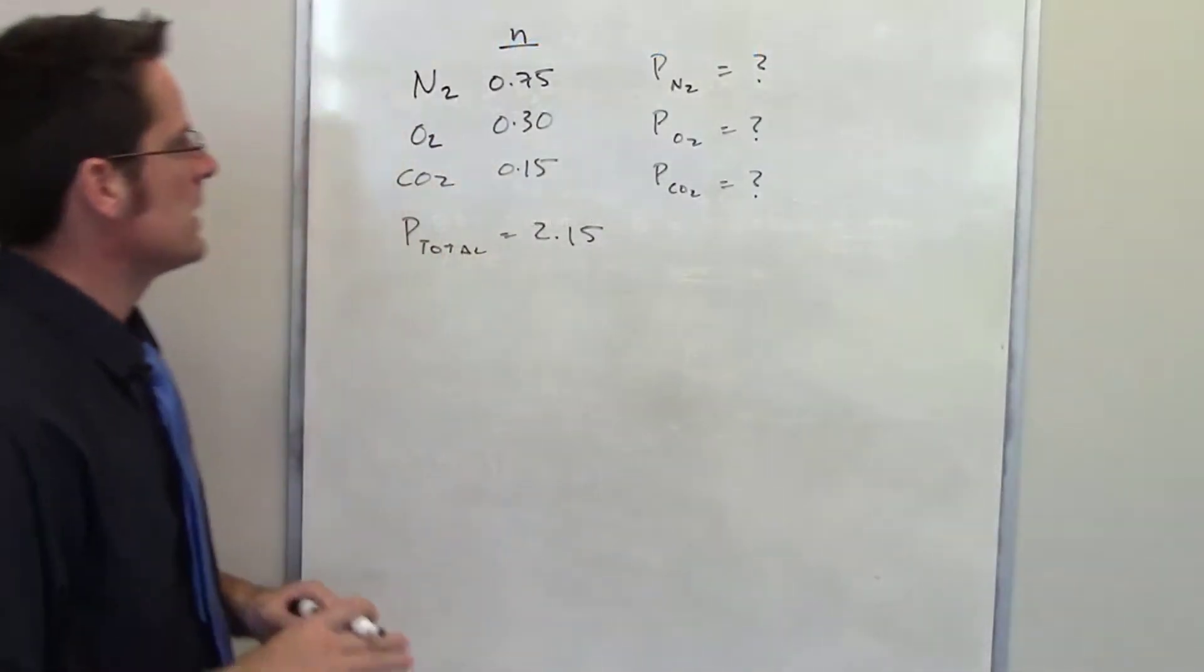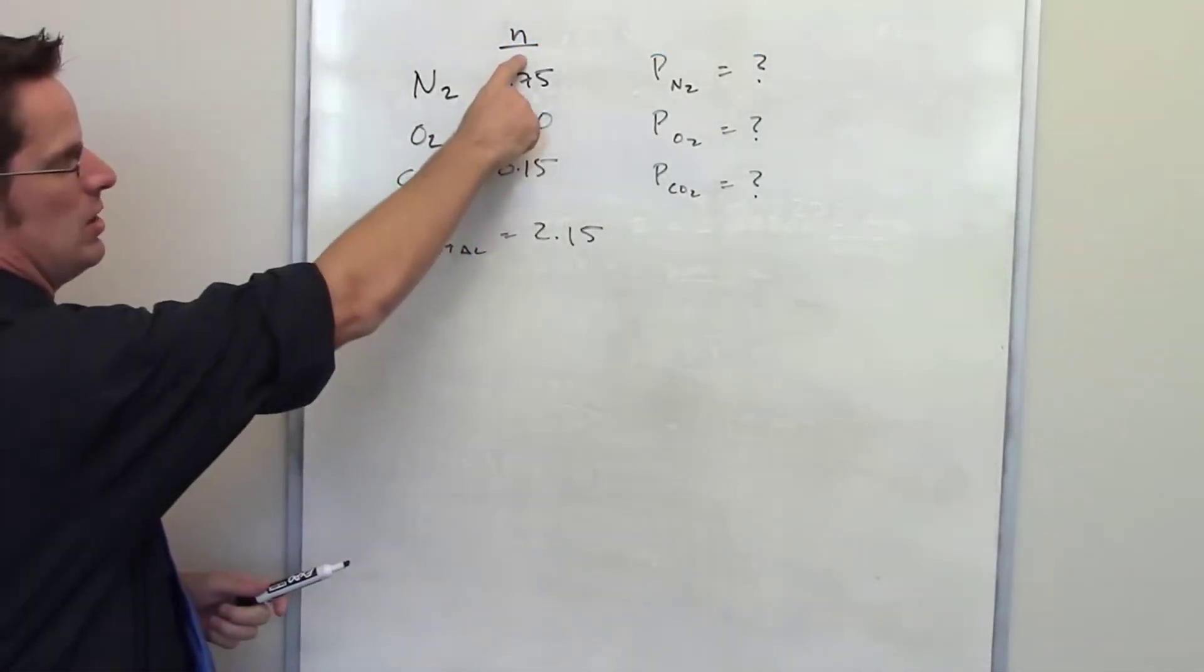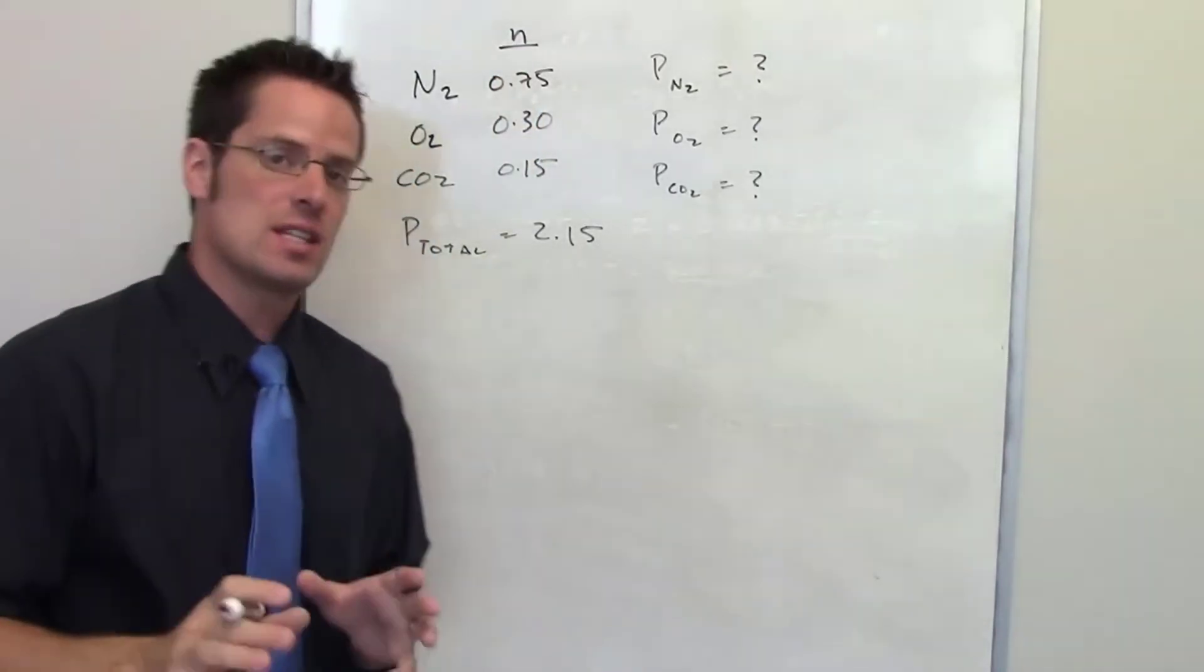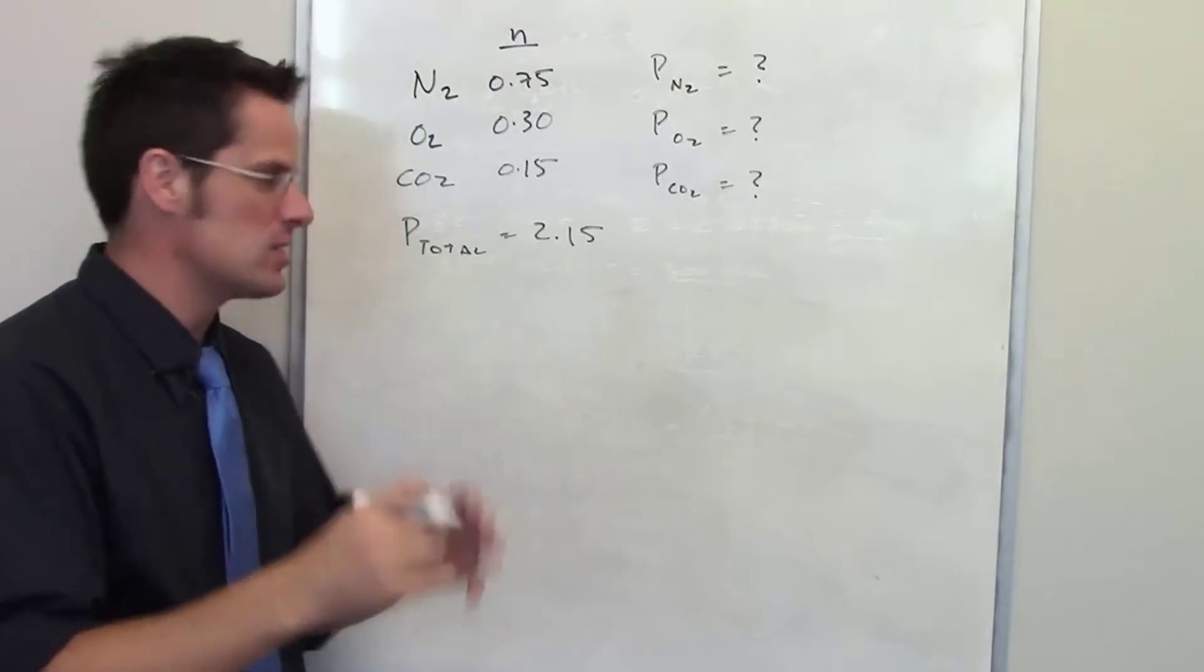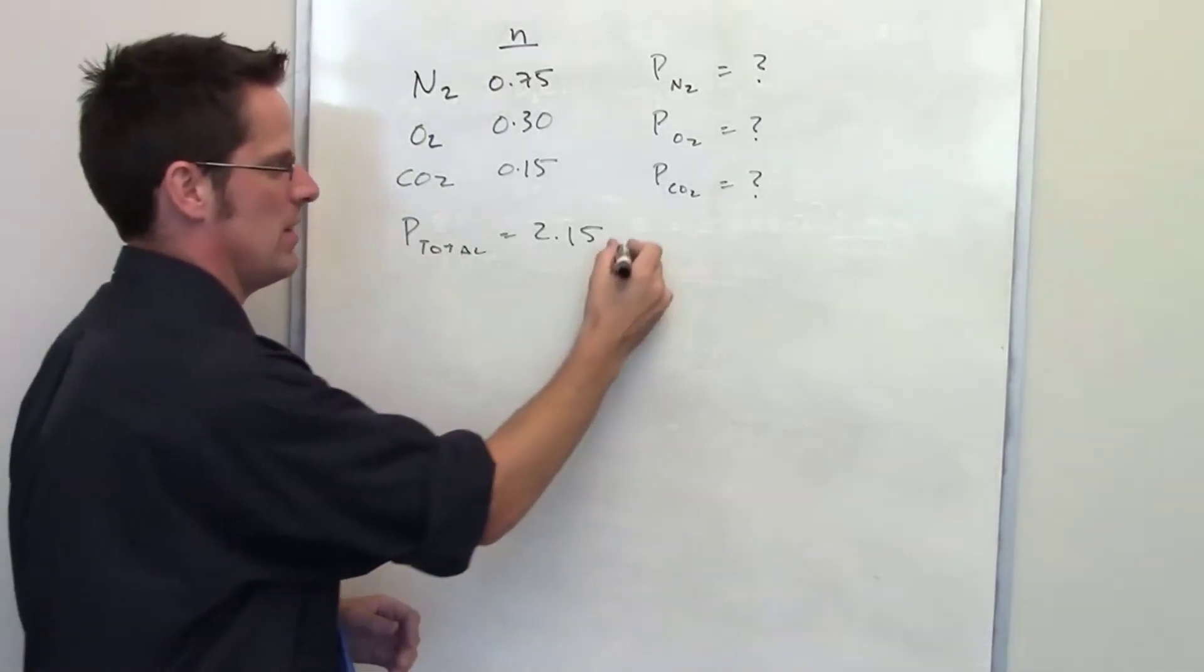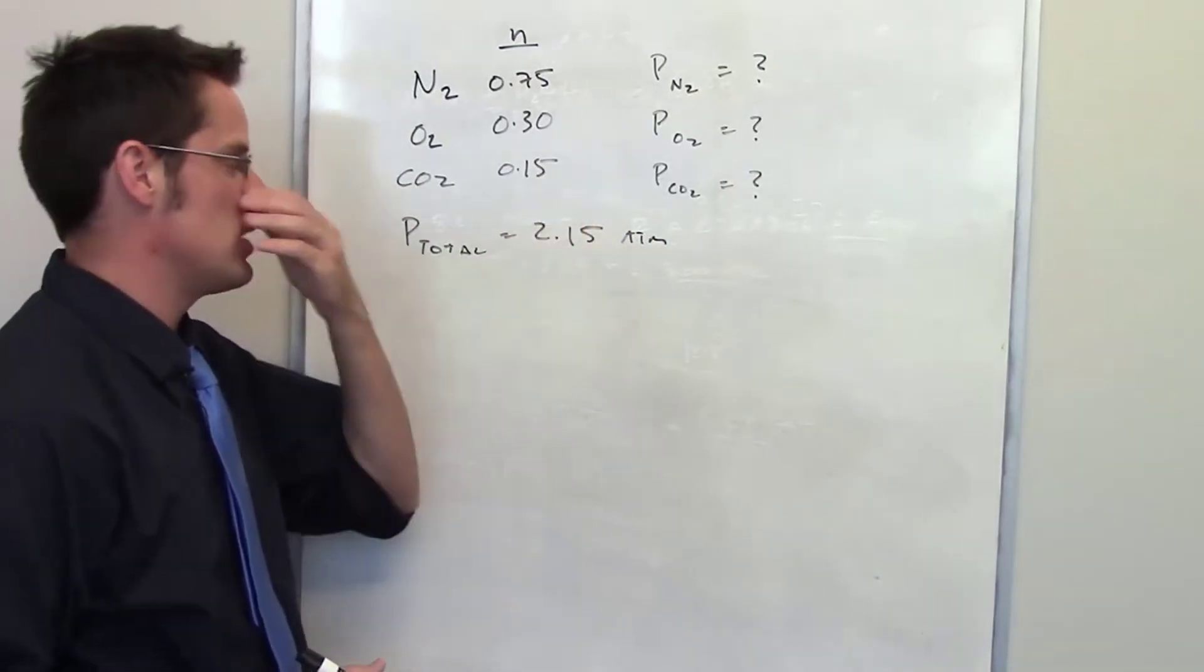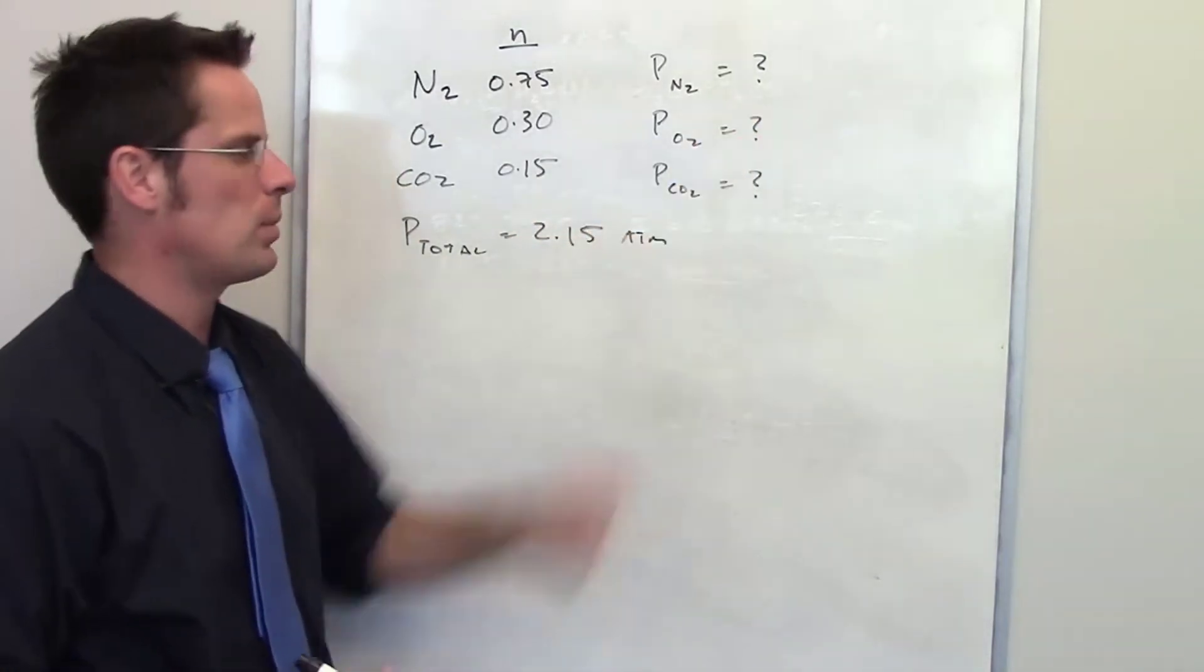So here I've been given the individual number of moles, which I have in this column labeled N, for these three gases in a mixture. It tells us that the total pressure of all these gases in this chamber is equal to 2.15 atmospheres. And then it asks us to use this information to calculate the individual pressures of each gas.